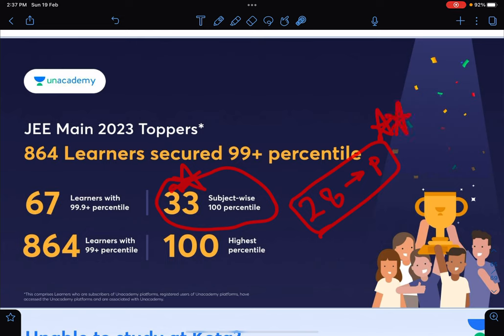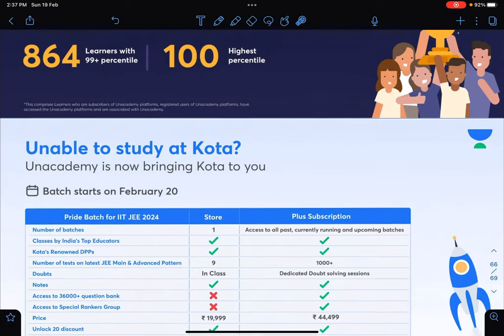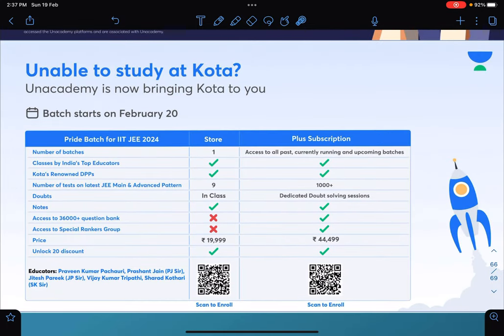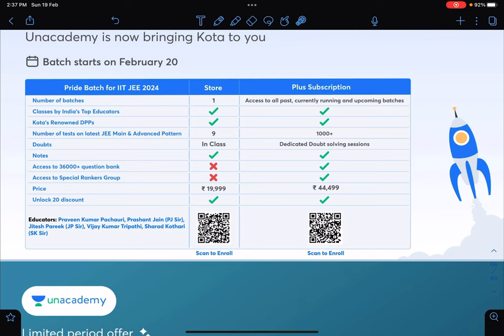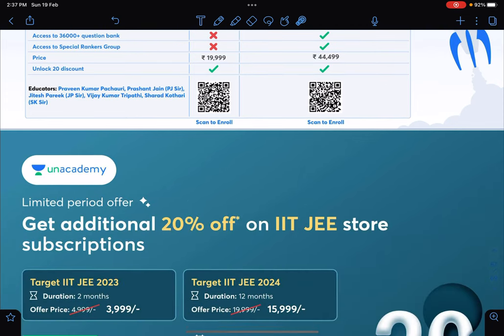You can see how much dominance was there in this. Those who opt for online courses can see here the batches are starting from Feb 20th, and about Pride batch and Plus subscription you can just go through it.